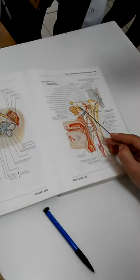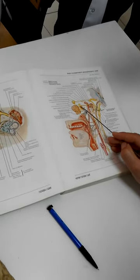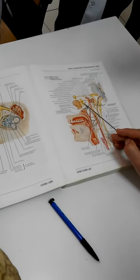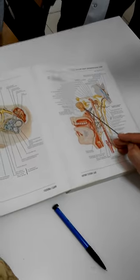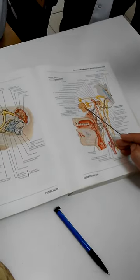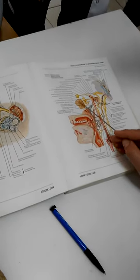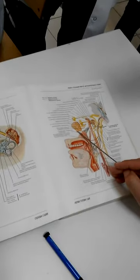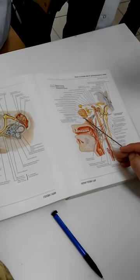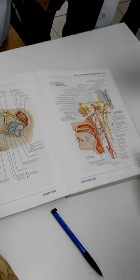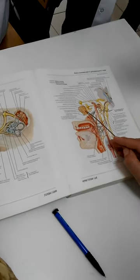Postganglionic fibers move with nervus auriculotemporalis partly, and then go to the parotid gland, innervating it with parasympathetic fibers. You know that nervus facialis does not innervate the parotid gland — it only penetrates it — but glossopharyngeus innervates it.